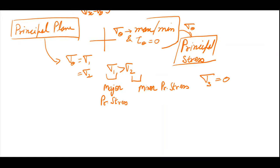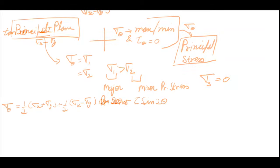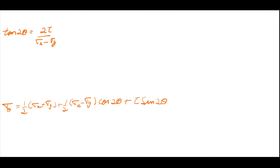We are considering a two-dimensional element, so we take the third principal stress as zero. In a three-dimensional element, there exist three mutually perpendicular planes on which there are three principal stresses: sigma1, sigma2, and sigma3.